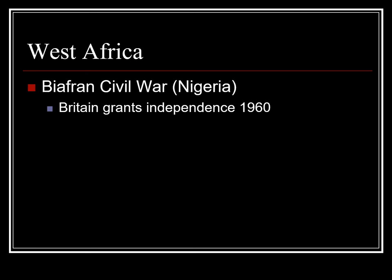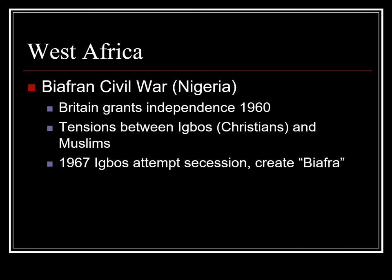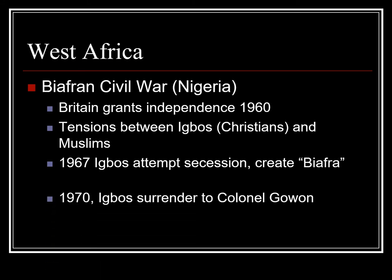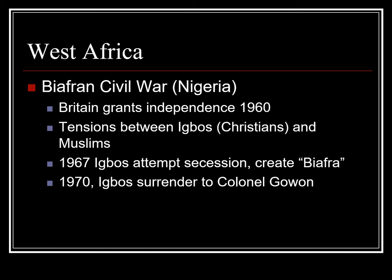In West Africa, in Nigeria, a civil war erupted after Great Britain granted independence. The Igbo tribe, a Christian minority, did not wish to be governed by the Muslim majority and attempted to secede and create its own country, Biafra. After three years of much death and destruction, a military leader was able to reunite the country with a strong authoritarian government. This was often the case in Africa and elsewhere — these so-called strongmen united peoples, but the price was often a lack of freedom.